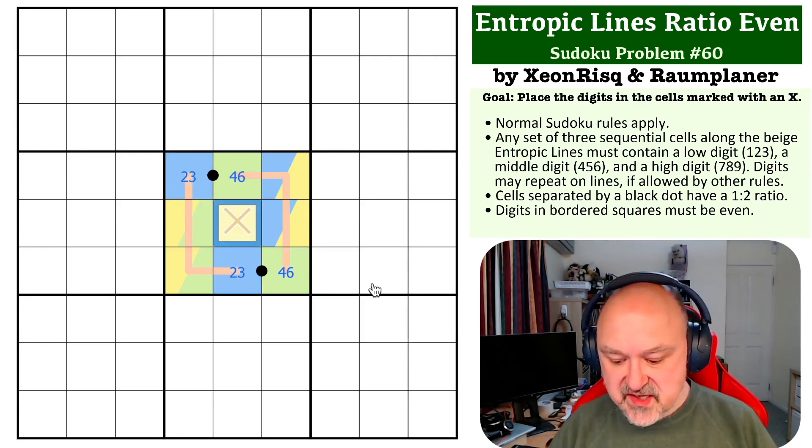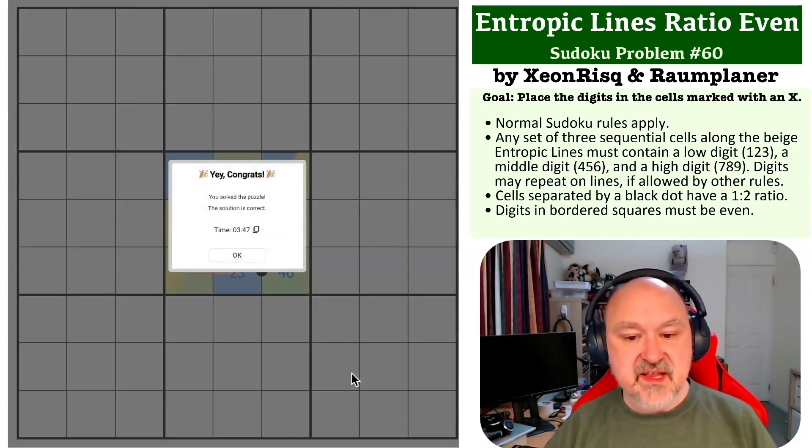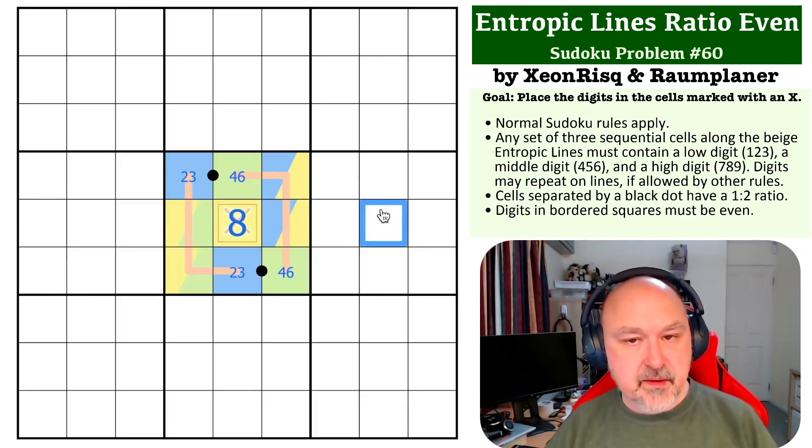So this is going to need to be a high digit, a seven, eight, or nine. But this needed to be even. So it must be the eight. And that is the only digit it can be.